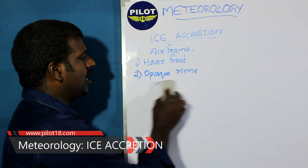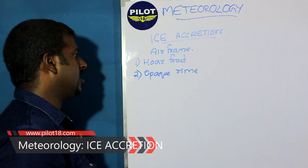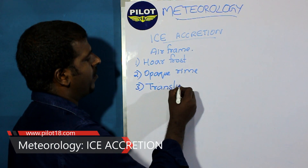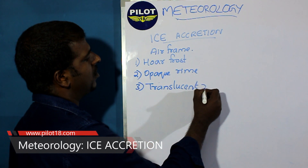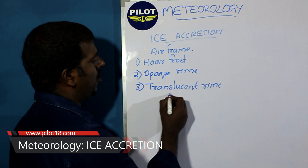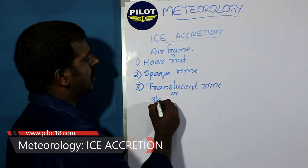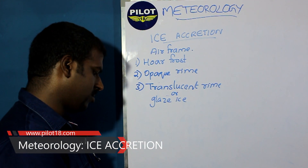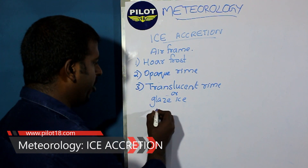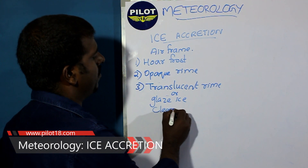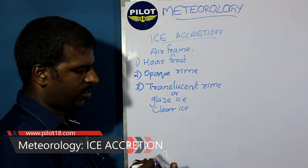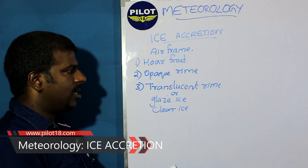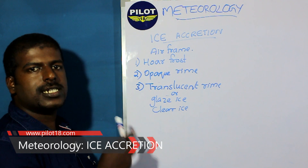Then comes the third type: translucent rime, also known as glazed ice or clear ice. This is an aviation hazard.